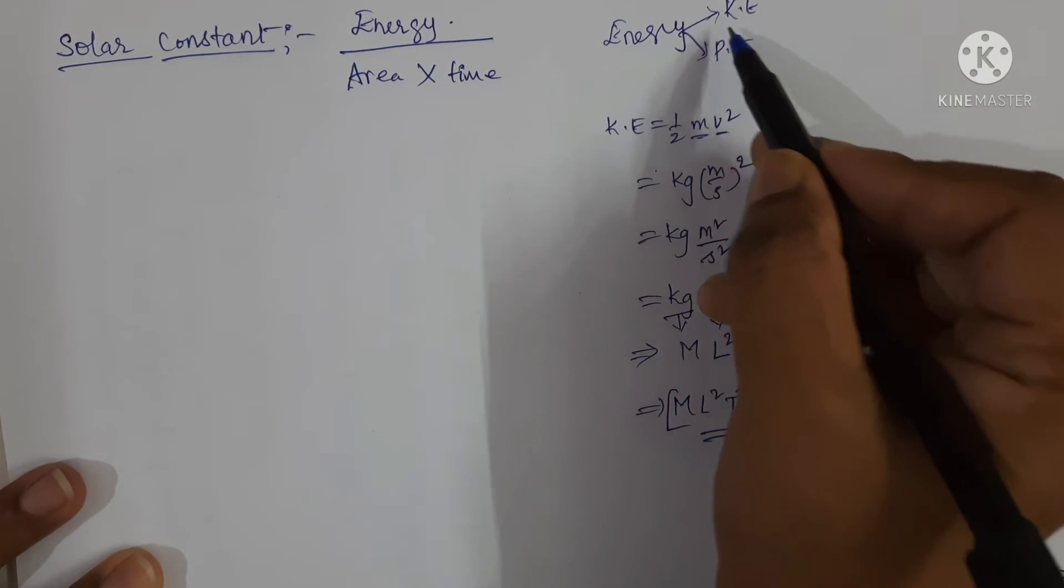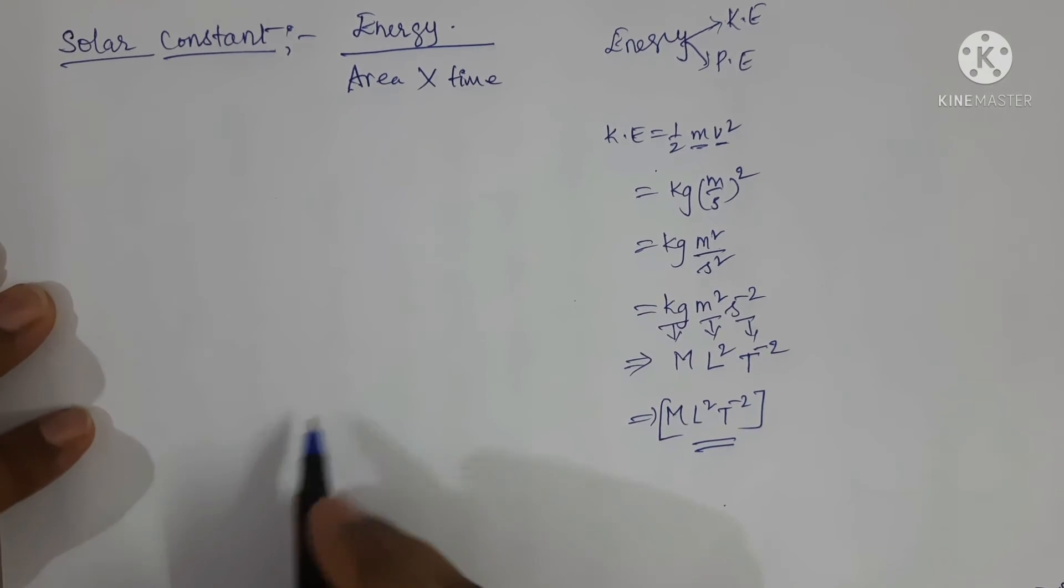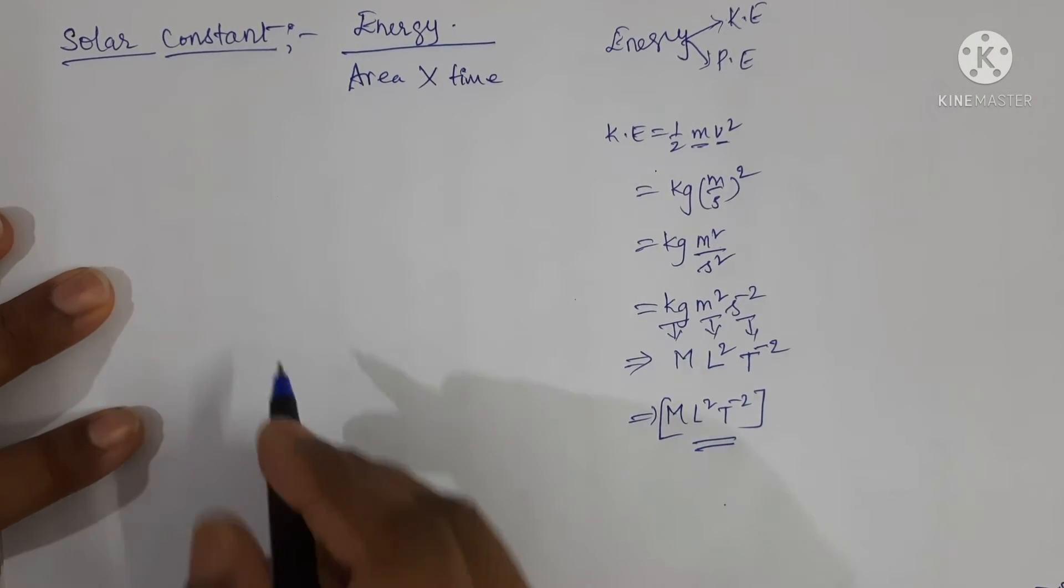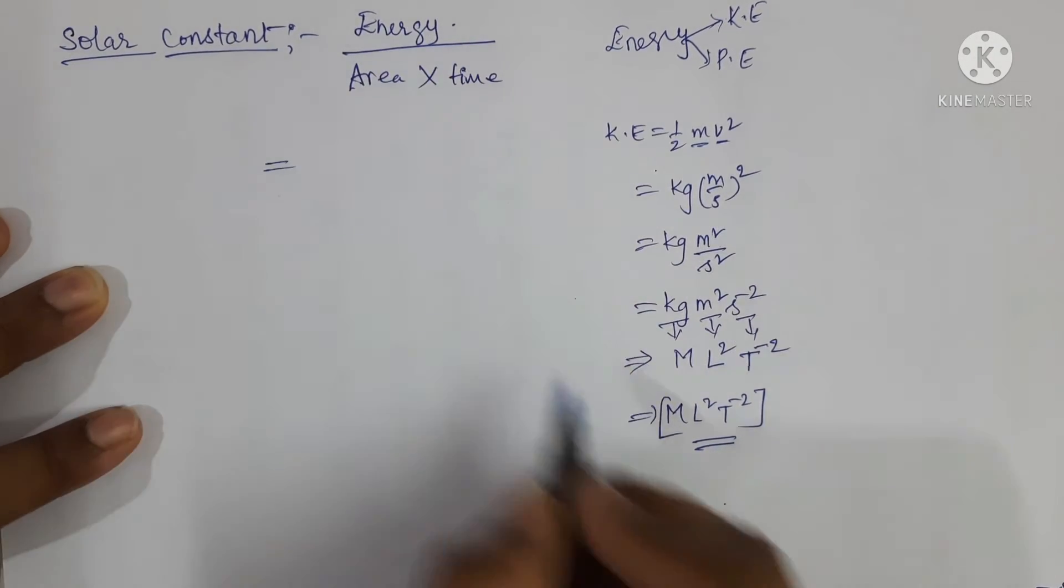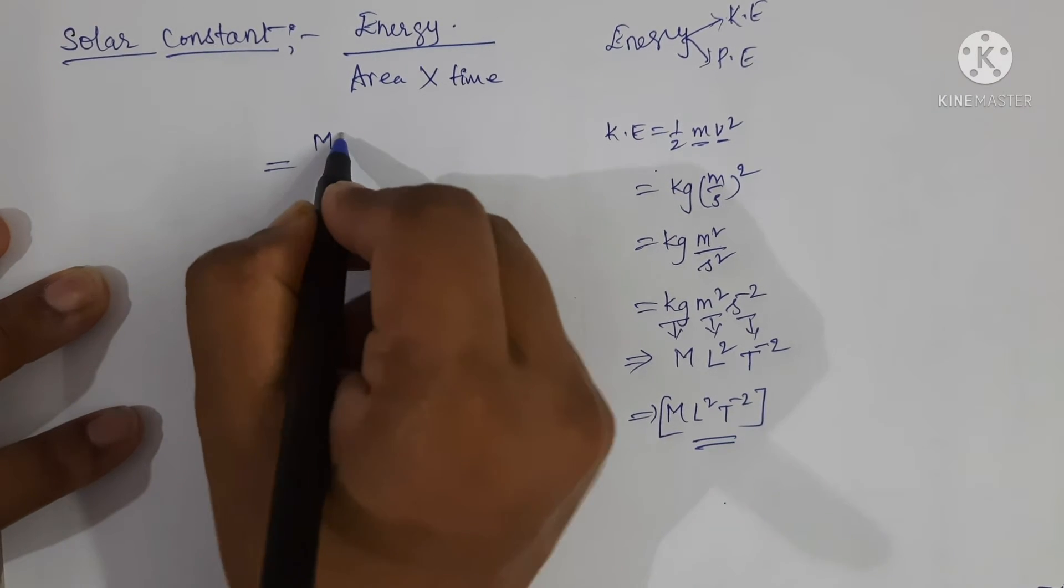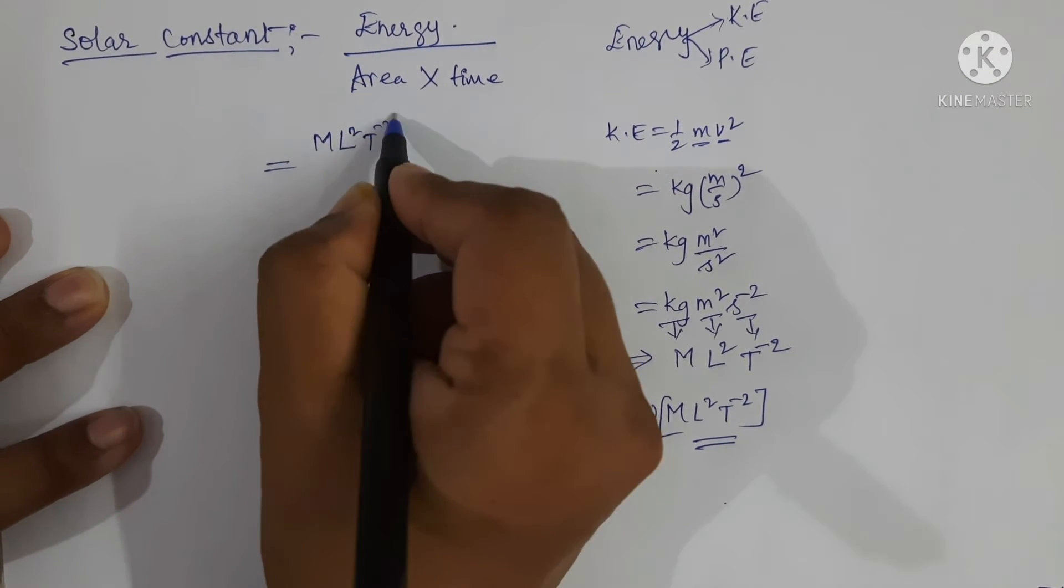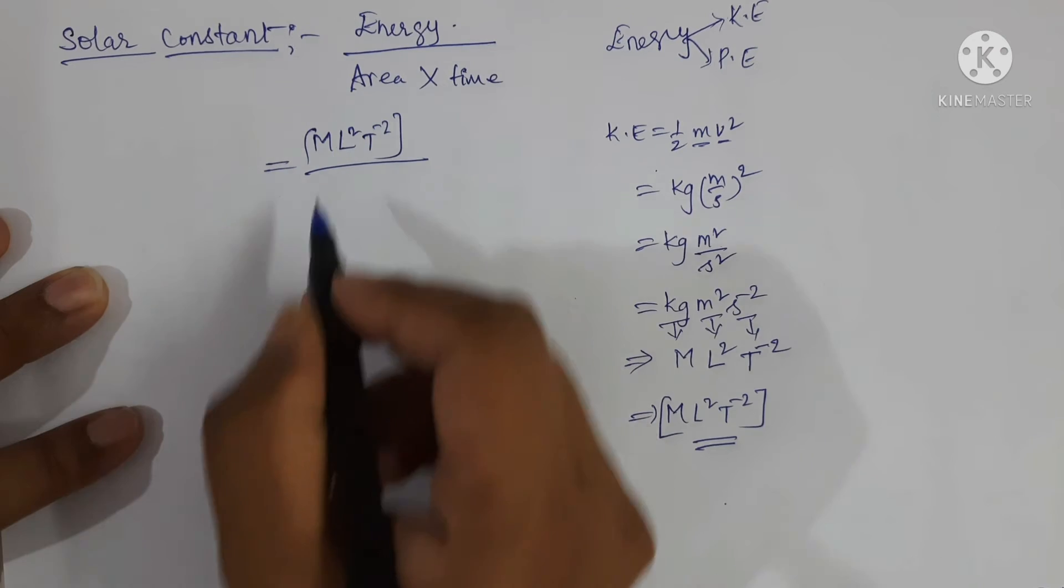Remember that kinetic energy and potential energy both have the same unit and same dimensions. I am replacing here with energy: M L square T power minus 2 upon area.